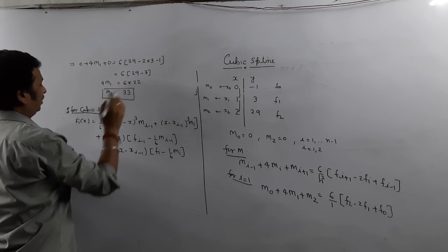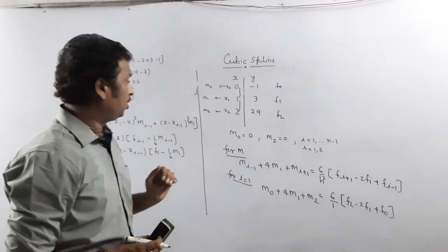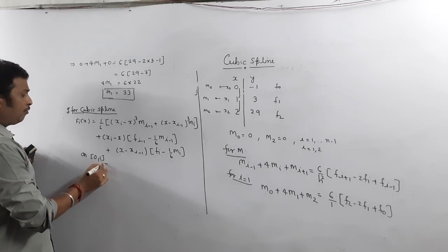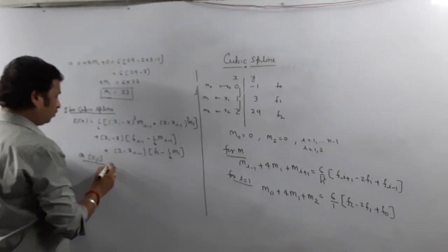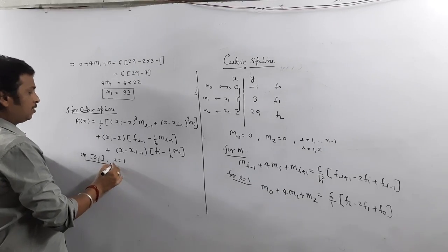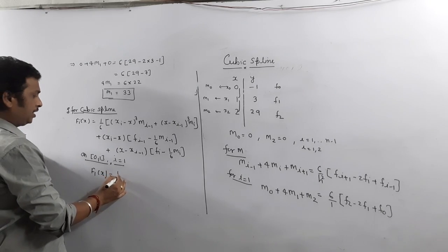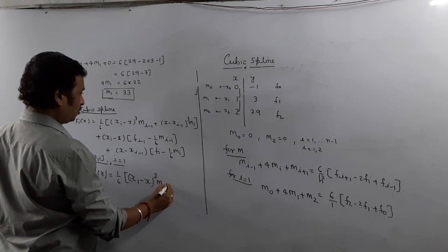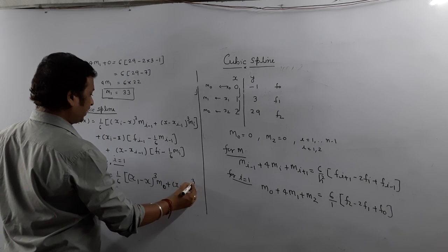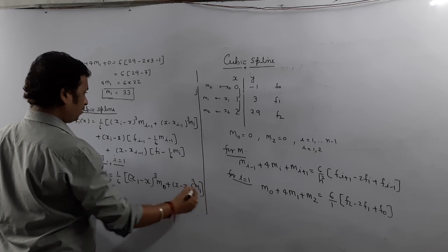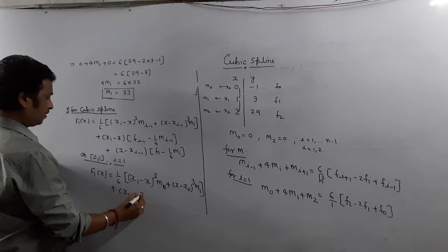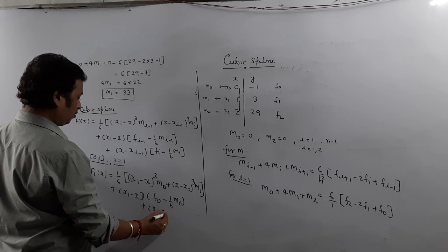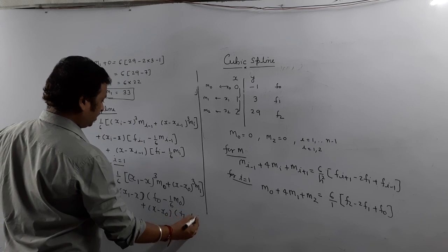Once we know M0, M1, M2, we use the cubic spline formula for each sub-interval. For the first sub-interval [0,1], i = 1. We write F1(x) = (1/6)[(x1 − x)³ M0 + (x − x0)³ M1] + (x1 − x)F0 − (1/6)M0 + (x − x0)[F1 − (1/6)M1]. Now substituting: x0 = 0, x1 = 1, F0 = −1, F1 = 3, M0 = 0, M1 = 33.